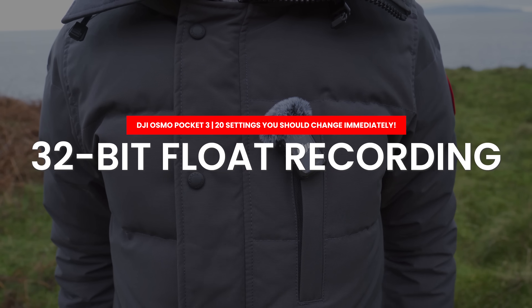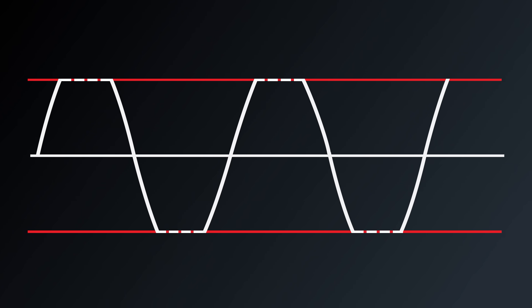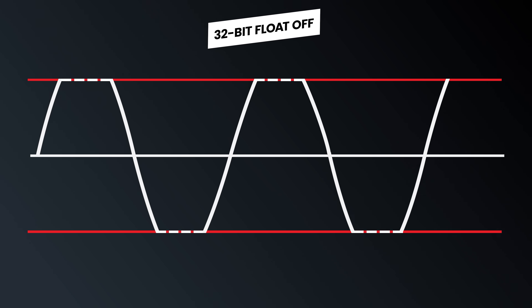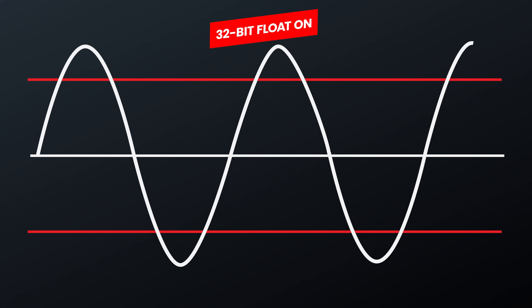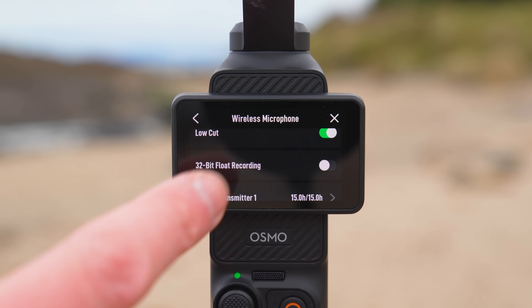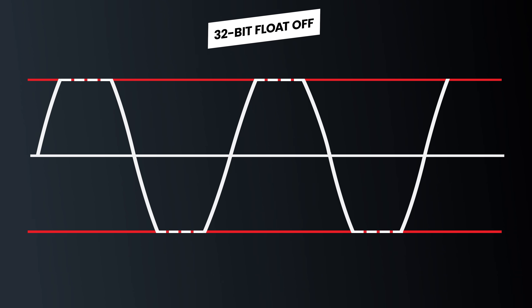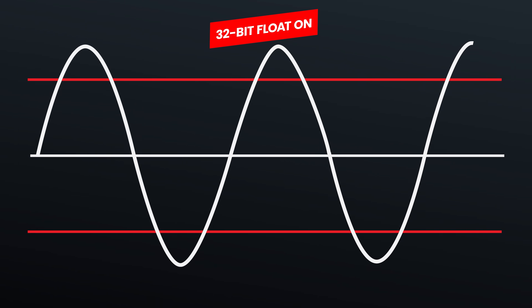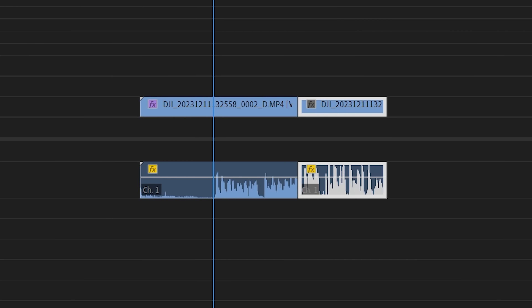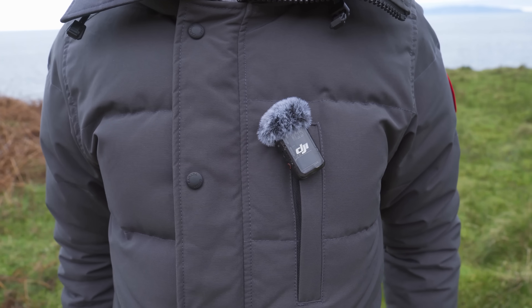Another really nice feature to turn on in the wireless mic settings is the 32-bit float option. This increases the audio dynamic range — similar to how more video dynamic range lets you capture more highlights and shadows. Normally if you capture audio that is very loud it can become clipped or distorted, but with 32-bit float enabled you have more available audio levels in your recording, so if you capture audio that is too loud like a scream or too quiet like a whisper, you can correct this in post without the audio becoming distorted.